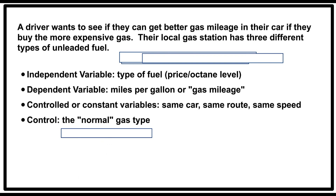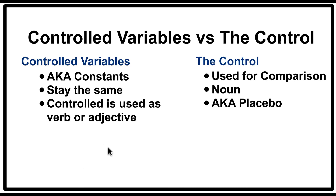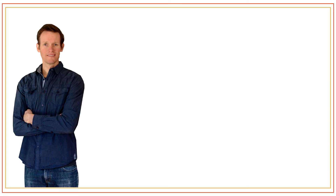To clarify the difference: controlled variables — also known as constants — should stay the same, and 'controlled' is used as a verb or adjective. The control, on the other hand, is used for comparison and is a noun, also known as a placebo. Please like this video if you found it valuable, subscribe to see more, and visit PassTheGED.org for more videos and learning opportunities to help you get the highest passing score on the GED. Good luck!